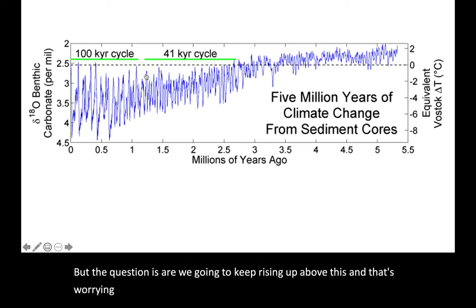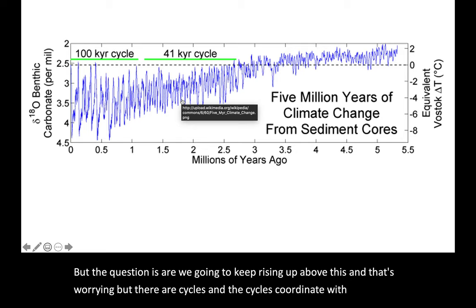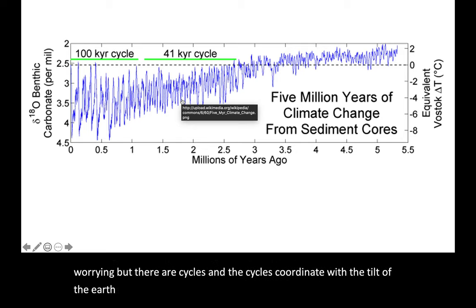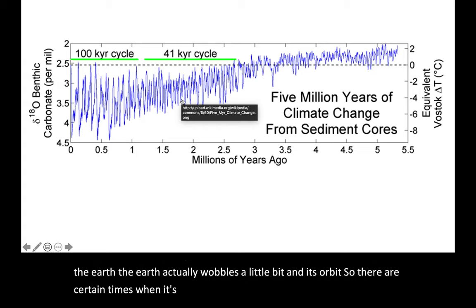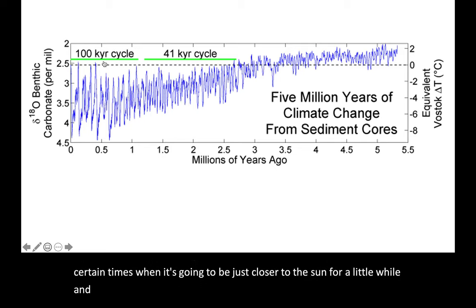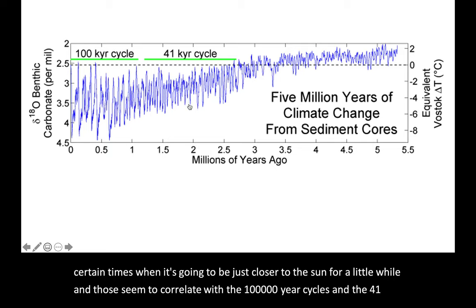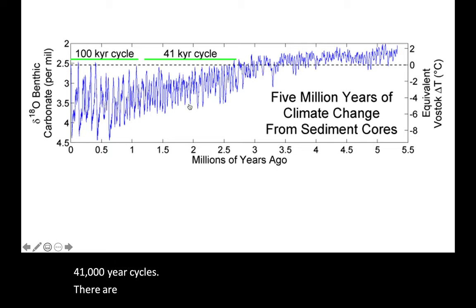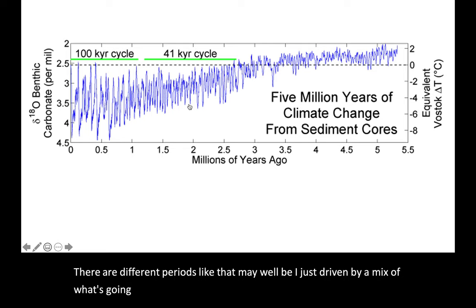We've risen back up to about there, but the question is: are we going to keep rising above this? And that's worrying. There are cycles, and the cycles coordinate with the tilt of the Earth. The Earth actually wobbles a little bit in its orbit, so there are certain times when it's going to be closer to the sun. Those seem to correlate with the 100,000-year cycles and the 41,000-year cycles.